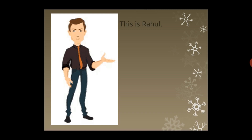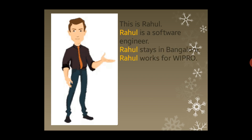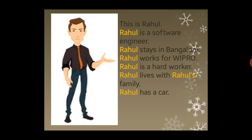This is Rahul. Rahul is a software engineer — most of your parents are software engineers, so you know this word. Rahul stays in Bangalore. Rahul works for Wipro. Rahul is a hard worker. Rahul lives with Rahul's family. Rahul has a car. All the yellow-colored words are nouns. Just see how many times we used the same word — one, two, three, four, five, six, seven — seven times we said 'Rahul'.